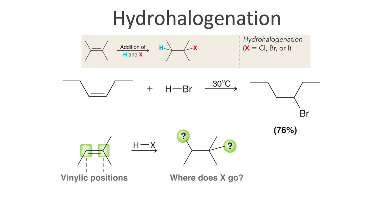However, there are circumstances where you have an alkene that is not symmetrical. In that case, where does the halogen go? The carbons that are part of the pi bond are called the vinylic carbons — those are the vinylic positions. The question becomes: at which vinylic position will the halogen be added? The difference is that one vinylic position has more hydrogens connected to it than the other — or, one vinylic position has more carbon bonds connected to it. That is a problem of regiochemistry.